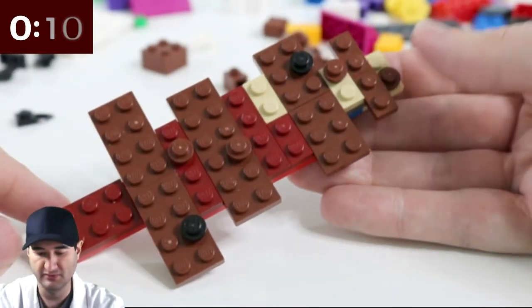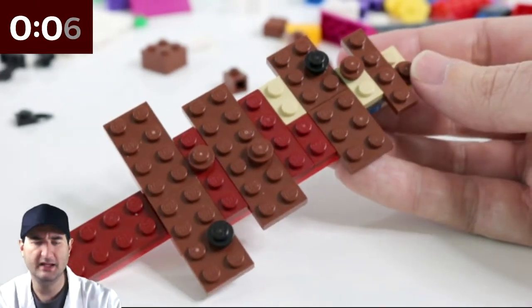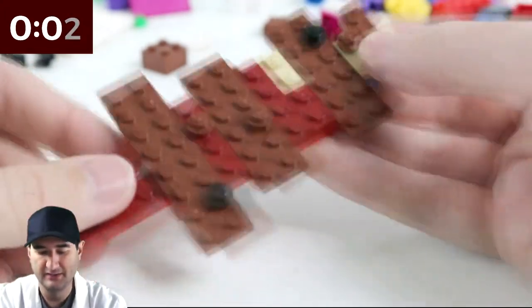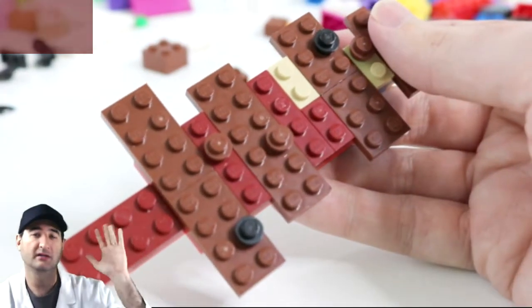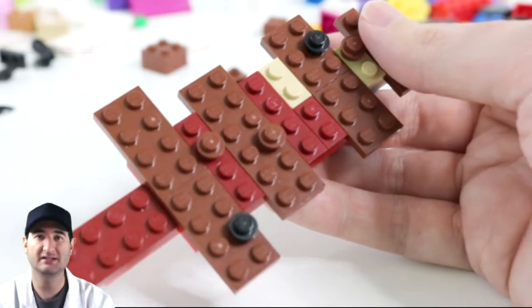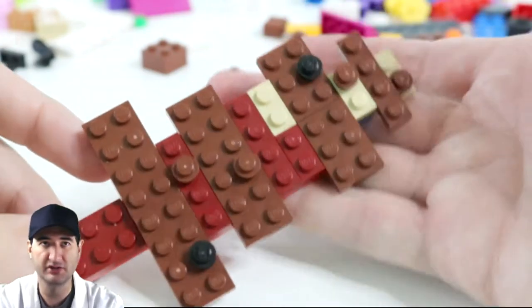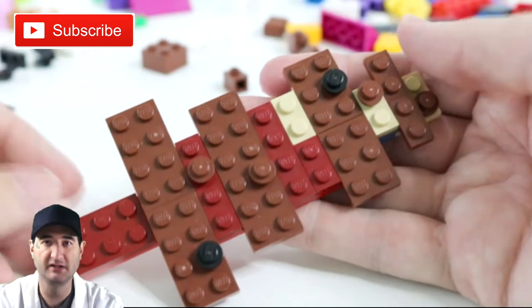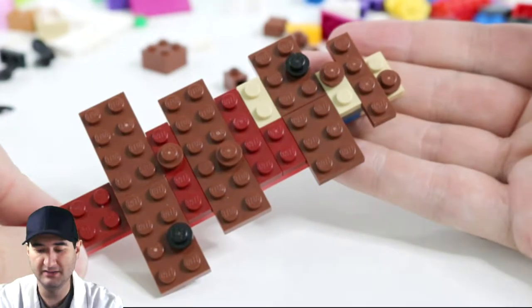I like that better, getting rid of that really bright red and going with this more browning red. That looks really good. So there is a fall leaf. It's not multi-colored, it's more brown, but that's what I find more on the ground. You know, they turn colors in the tree, but when they fall and start to dry out on the ground, they all turn to a brownish color.